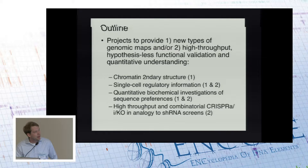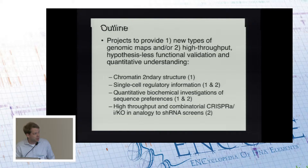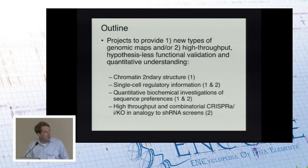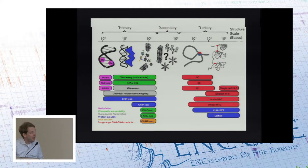Projects are either going to provide new types of genomic maps, or high-throughput hypothesis-less functional validation and a quantitative understanding of how those elements are operating. Here's a quick outline. First, I'm going to talk about new methods to get chromatin secondary structure, looking at single-cell regulatory information. I'll pitch a quantitative biochemical investigation of DNA sequence, and also something to do with CRISPRs. That's four things in 10 minutes, so I'm going to go fast.